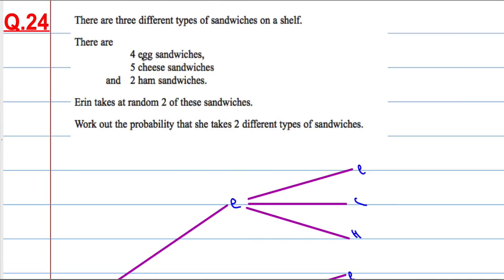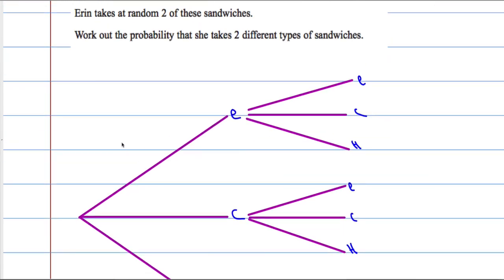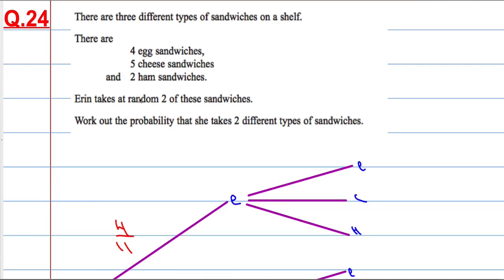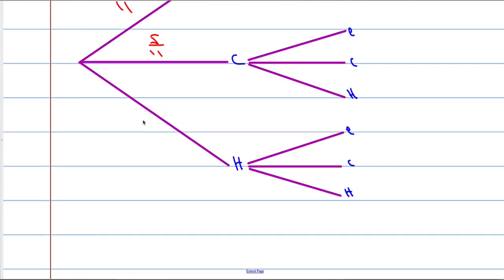Now we had four egg sandwiches, five cheese, and two ham, which means the probability of choosing egg on the first round — you've got four egg sandwiches but there are 11 different sandwiches in total — so it would be 4 out of 11. Then five cheese, so it would be 5 out of 11. And two ham, so 2 out of 11.